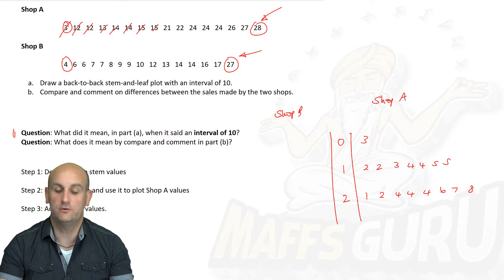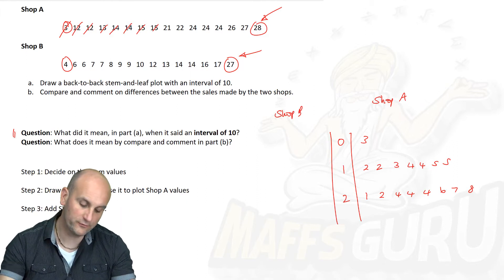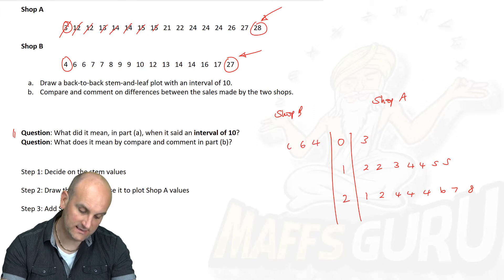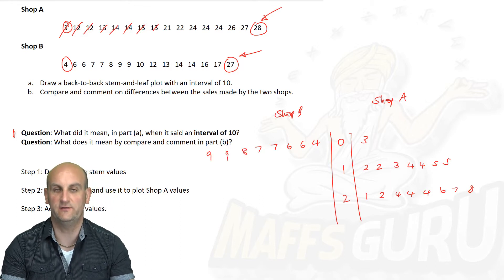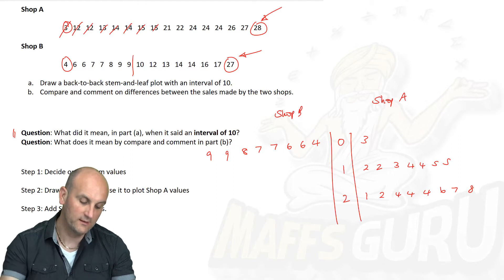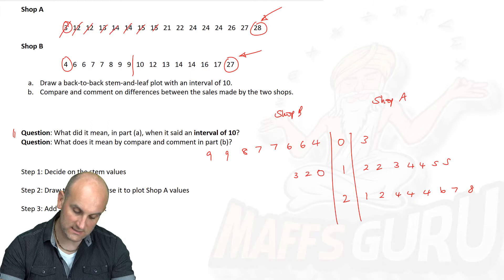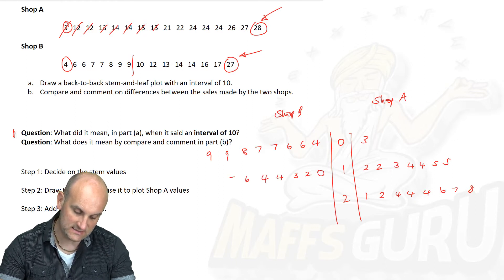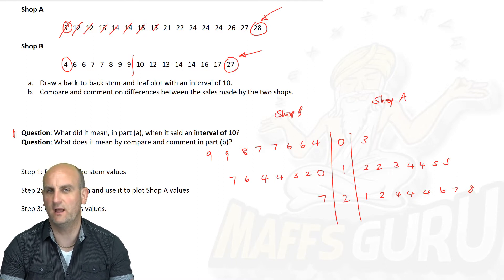How do I do my shop B? Well, believe it or not, I just do the data going the other way. In this situation, there is my value 4, and 6, and 6, and 7, and 7, and 8, and 9, and 9. Obviously, I've run out of space here. So now, we're going to go 10, 12, 13, 14, 14, 14, 16, and 17, and then 27. And ladies and gentlemen, there is my stem and leaf diagram done.